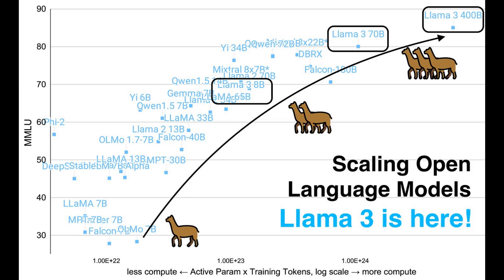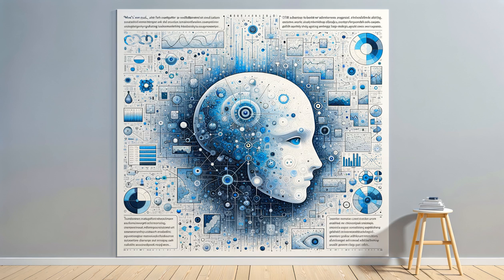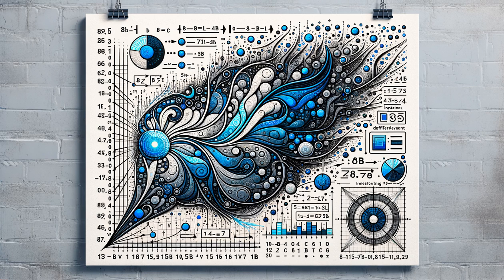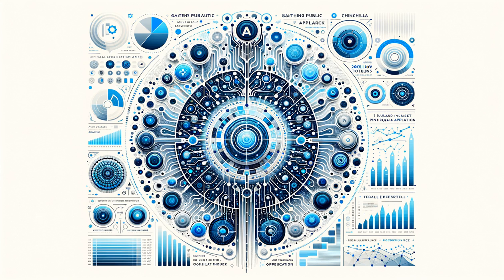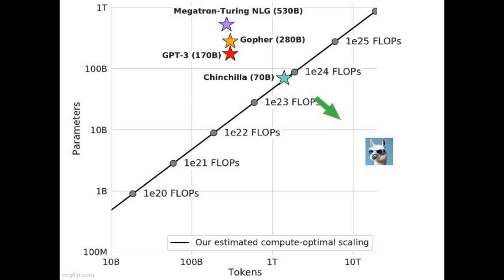Meta's models and the commitment to better inference time performance at the cost of training costs completely go against any notion of chinchilla optimal training dataset size. From the blog post, both our 8B and 70B parameter models continue to improve log linearly after we trained them on up to 15T tokens. Larger models can match the performance of these smaller models with less training compute, but smaller models are generally preferred because they are much more efficient during inference. The change here was illustrated nicely by Sasha Rush. See figure four.